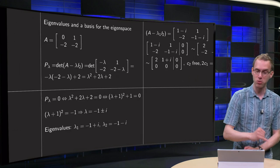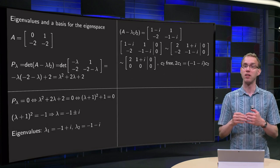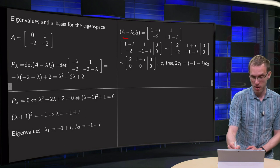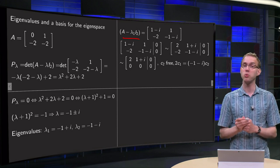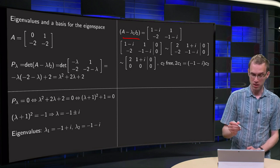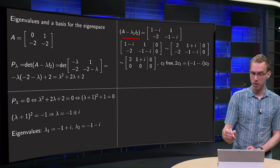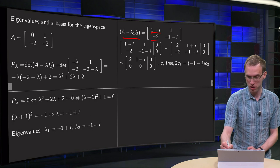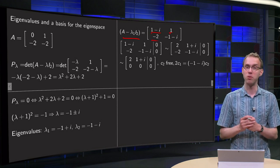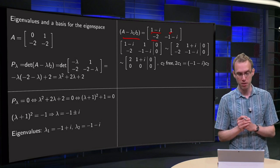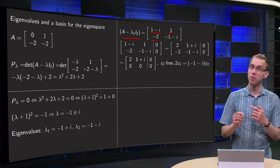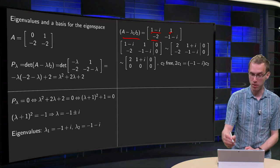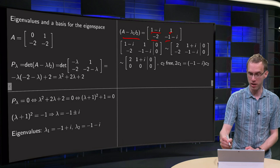On to the eigenspace, to the eigenvectors. For that we have to compute A minus lambda times I2 first. So we get the matrix 1 minus i, minus 2 and 1 stay where they are, and we have minus 2 minus minus 1 plus i, so that yields minus 2 plus 1 minus i over there.